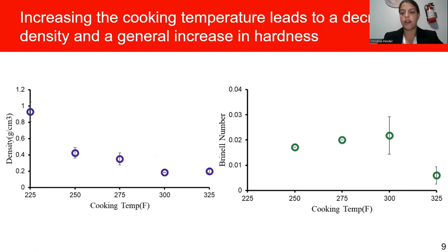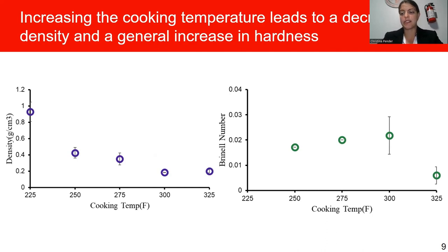When considering our data at 325°F, where the hardness number is lower, something that could explain this is that the baking soda is reacting more, producing more bubbles within the candy, which affects the hardness factor. That would explain why at 325°F we see a decrease in hardness — just an increase in bubbles and baking soda reaction rate.